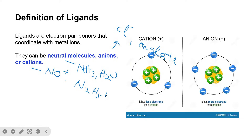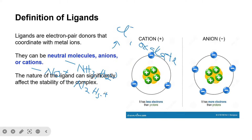For cationic ligands we have nitrosonium (NO⁺) and hydrazinium (N₂H₅⁺). These are examples of cationic ligands. So ligands can be classified based on their charges.